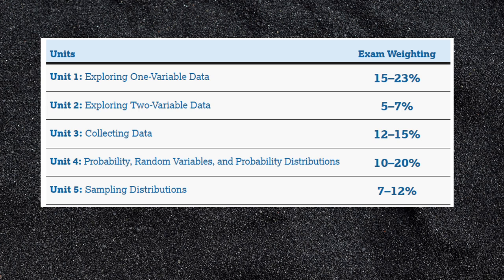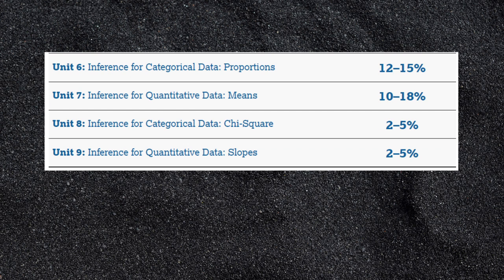Here's what the College Board says is the breakdown for the percentage of questions from each unit. Unit one, exploring one variable data: 15 to 23% — that's actually the most. Unit two, exploring two variable data: 5 to 7%. Unit three, collecting data: 12 to 15%. Unit four, probability, random variables and probability distributions: 10 to 20%. Unit five, sampling distributions: 7 to 12%. Unit six, inference for proportions: 12 to 15%. Unit seven, inference for means: 10 to 18%. Unit eight, chi-squared: 2 to 5%. And unit nine, slope: 2 to 5% as well.